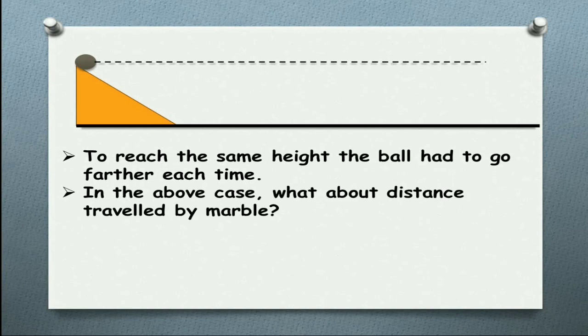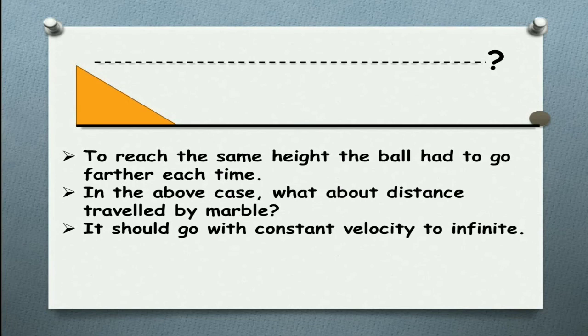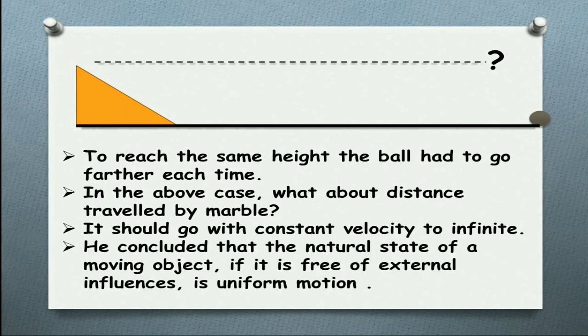In the above case, there is no such height. The ball should move on continuously to the infinite, because there is no height matching factor at all. So he concluded that the natural state of the moving object is uniform motion until there is no external force acting on it.